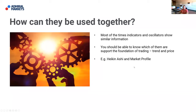How can they be used together? Most of the time indicators and oscillators show similar information: overbought/oversold situations, divergences, whether you're in a range, a move, or a correction. You should know which of them support the foundation of trading — that's trend and price.